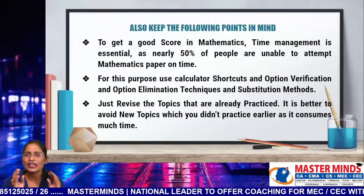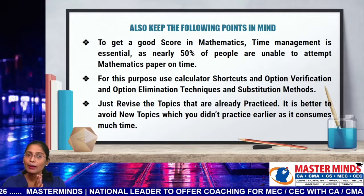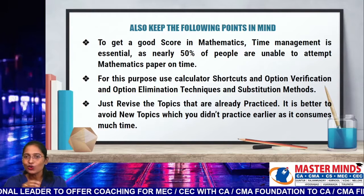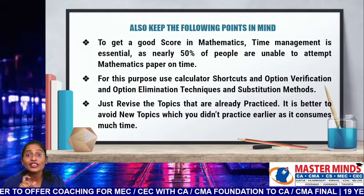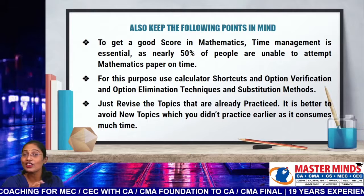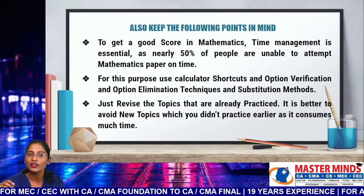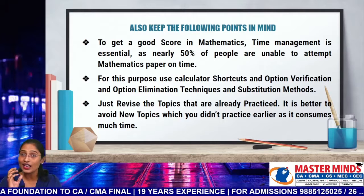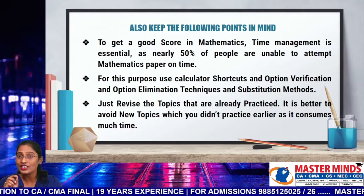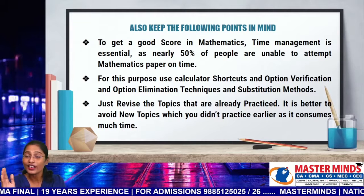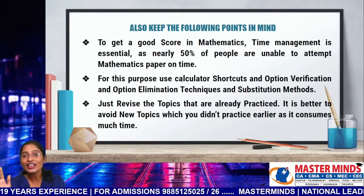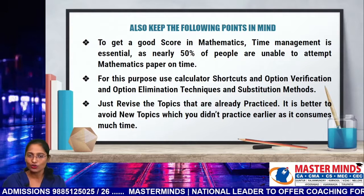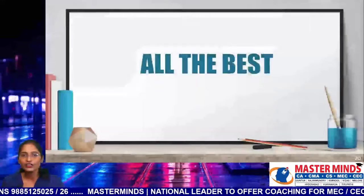That is all about the entire math syllabus revision. For this final step before writing the exam, please keep the following things in mind to get a good score in math. Time management is most essential — nearly 50% of students are not able to attempt the question paper on time. For this purpose, use your calculator shortcuts, option verification, option elimination techniques, and substitution models. Go through all the shortcuts given in your fast-track material — they will be quite helpful in reducing time. Just revise the topics that you have already practiced. Don't try to revise a very new topic because it consumes a lot of time. All the best for your preparation. Thank you.